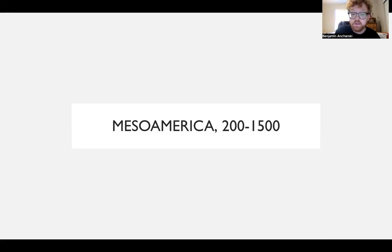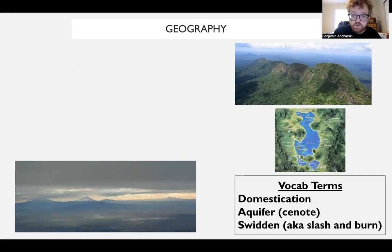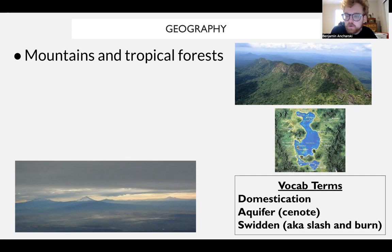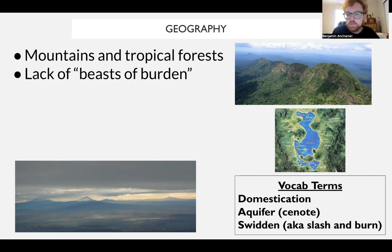Let's first look at Mesoamerica, sometimes called Central America. Starting with geography: Mesoamerica is a mix between two basic forms of terrain. In parts including southern Mexico, you have semi-arid mountains, but also dense tropical forests as you get closer to the Caribbean and South America. This natural environment will impact what societies form and how they form in Mesoamerica.